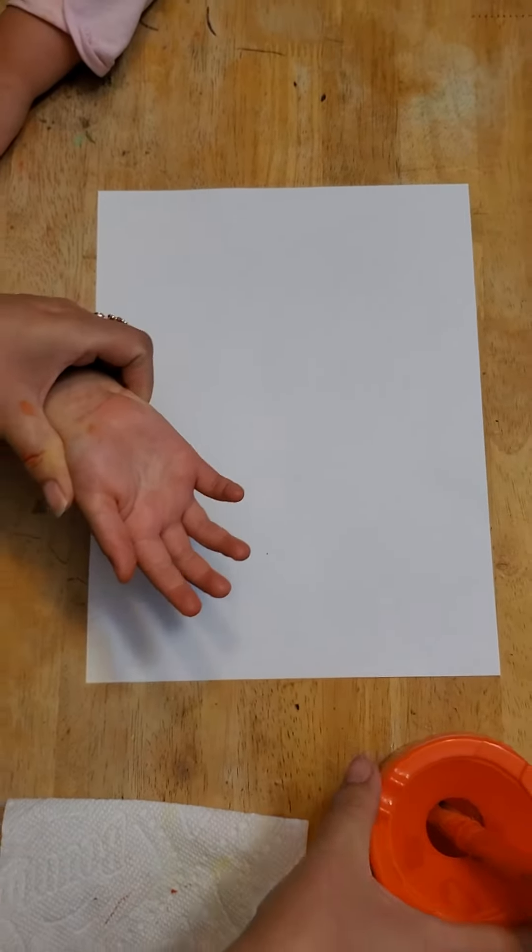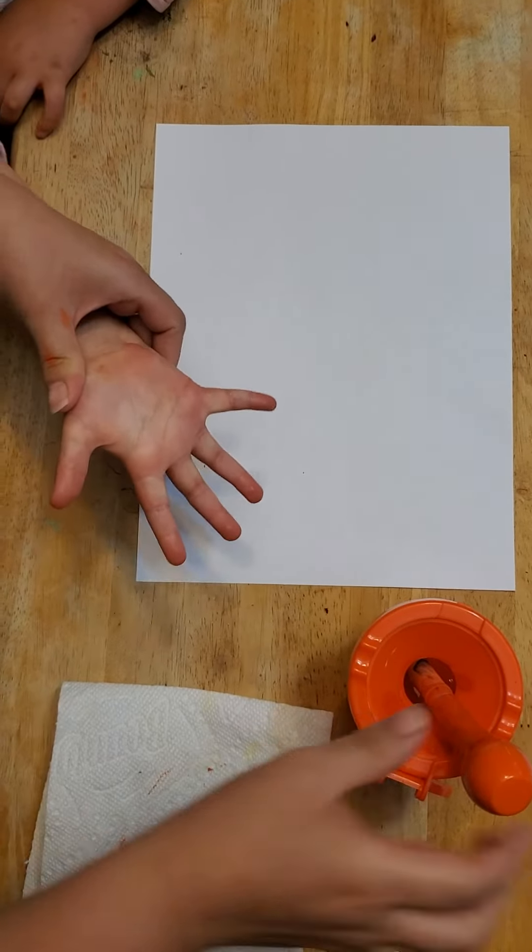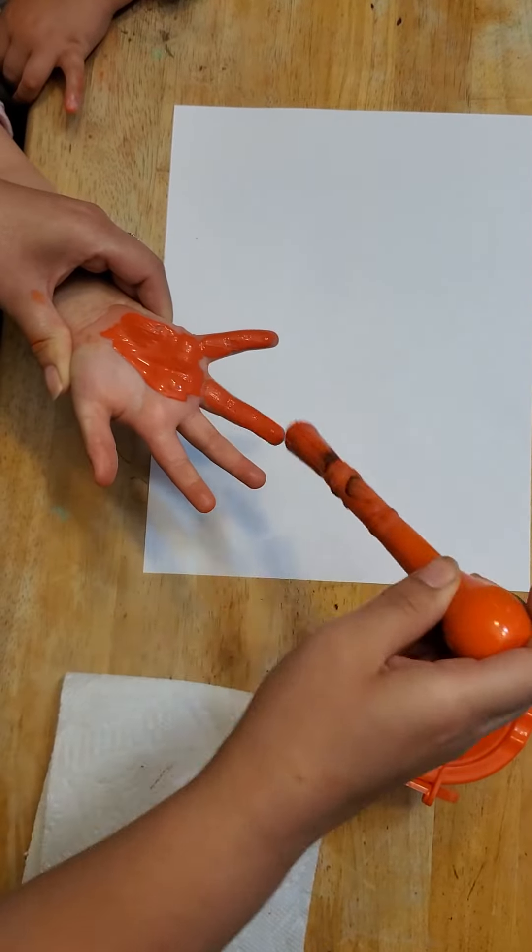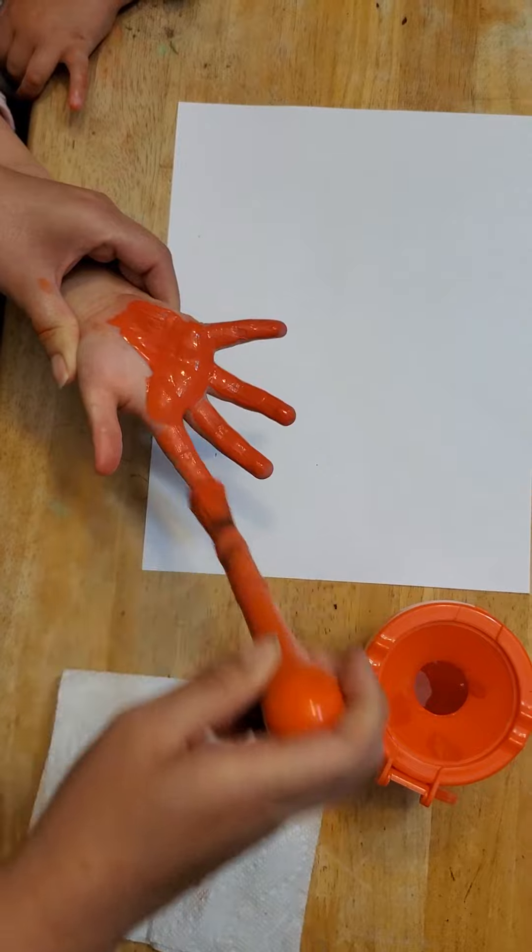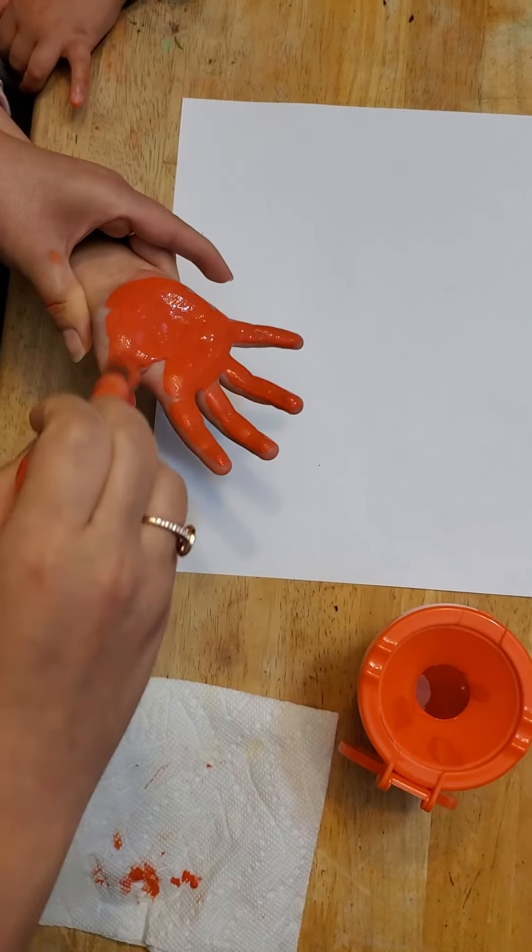The next thing we're going to do is start spreading the paint. You're going to open up your hand, open the fingers wide. We're going to spread the paint nice and generously. You want to make sure to get all of the cracks and crevices. Don't want to miss any spots. Spread generously. We'll take off any excess afterwards.